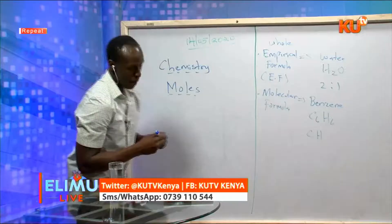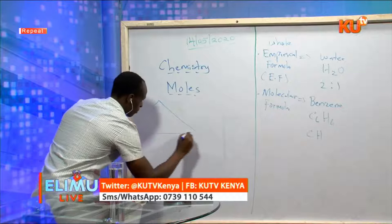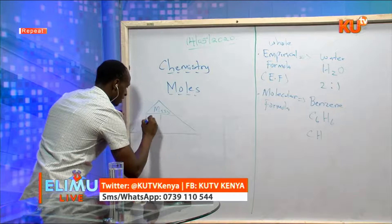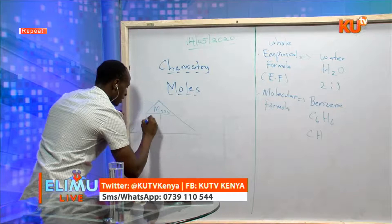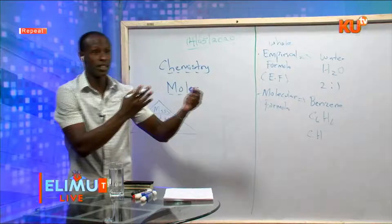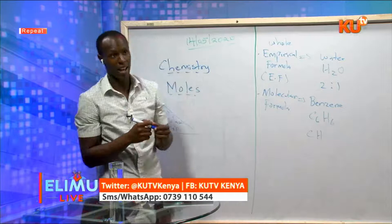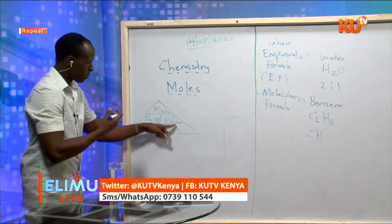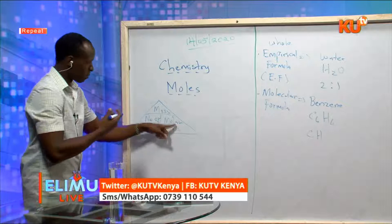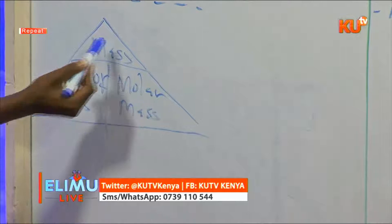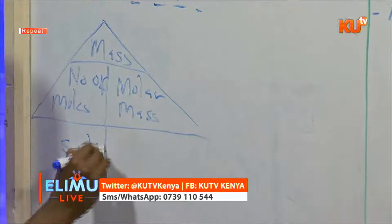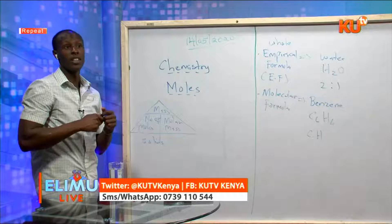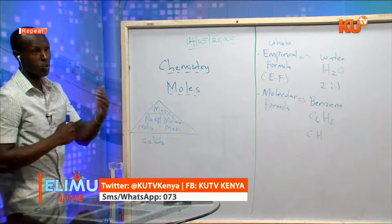The first two formulas I'll represent in triangles. In the first triangle, at the top is mass; at the bottom left is number of moles; and at the bottom right is molar mass — sometimes called relative formula mass (RFM) or relative atomic mass (RAM). Mass equals number of moles times molar mass; number of moles equals mass over molar mass; molar mass equals mass over number of moles. This triangle mainly applies for solids, mostly metals.